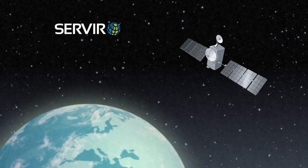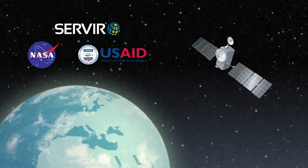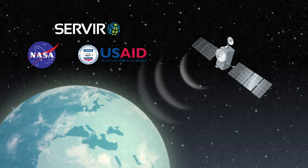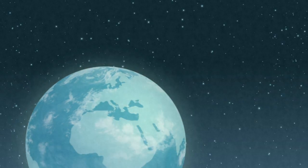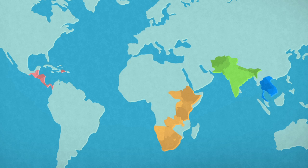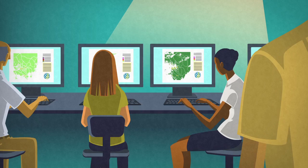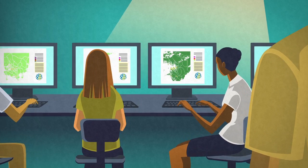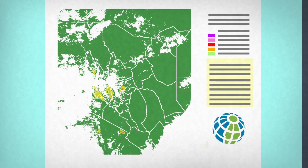And SERVIR, a joint initiative of NASA and USAID, works to connect space to village. SERVIR's global network of hubs streamlines access to data and imagery from satellites, so analysts can integrate this information into tools and models that are accessible to those who need it most.